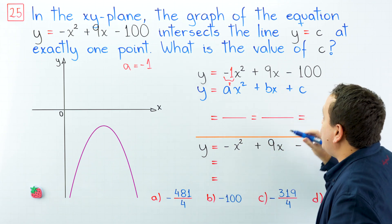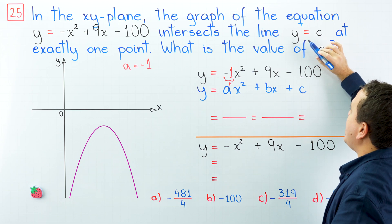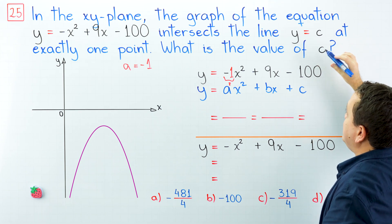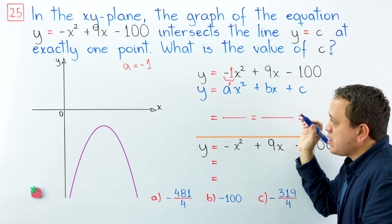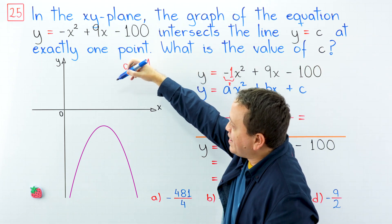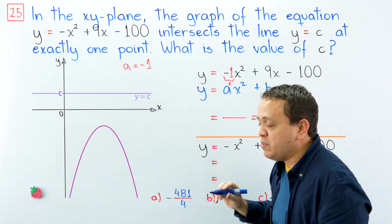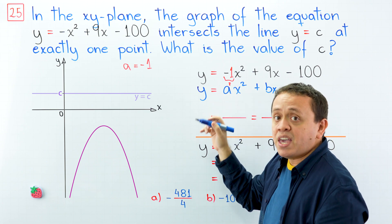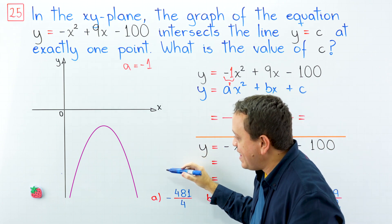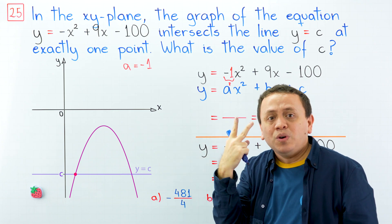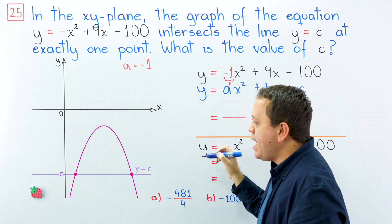And now let's focus on the second equation, that is y = c. This is a constant function, and its graph is a horizontal line. For example, if c is located up here, this will be the line y = c, and there are two intersection points between the parabola and the line. However, if c is located down here, there are also two intersection points between the parabola and the line.